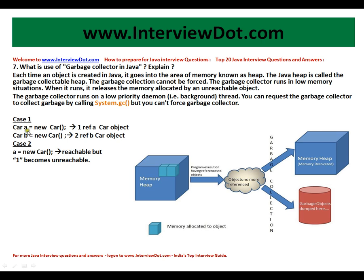I have given an example here: Car a = new Car — one object is created; Car b = new Car — another object is created. So there are two references referring to two objects. In the second case, we assign a new Car to a. The object that was previously assigned to a will become unreachable — we have assigned a new Car to a, so the previous object becomes an unreachable object.